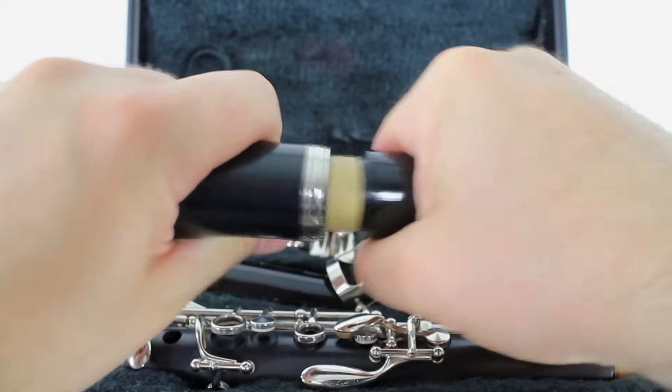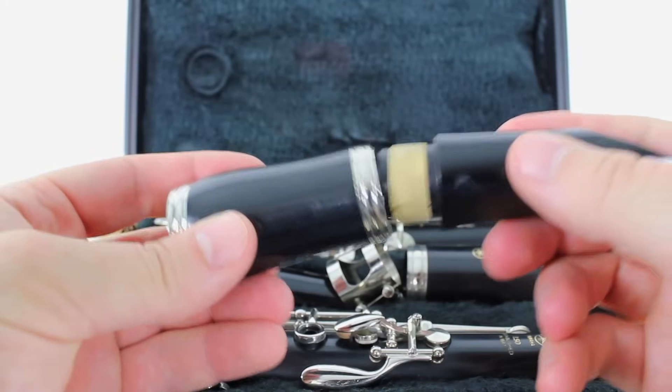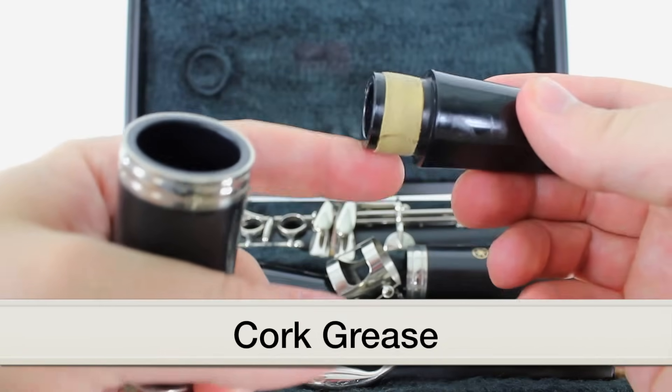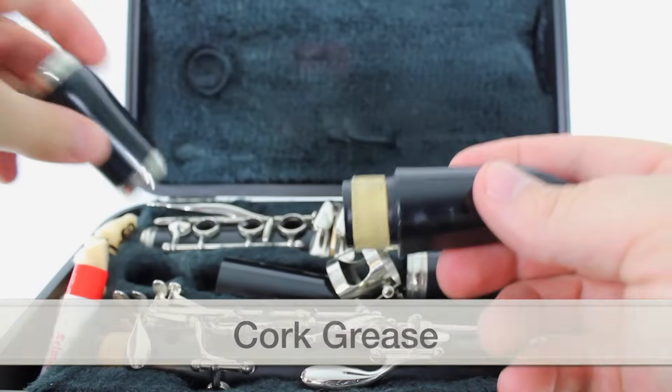Now if you're using a lot of muscle and you still can't get these two parts together, we have something called cork grease that we put on the cork. It makes it easier to put the parts together. Let me show you how we do that.